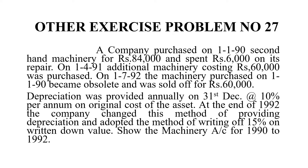If you look at the first method, it is the Straight Line Method at 10% depreciation. At the end of 1992, they change to the Written Down Value method at 15% depreciation. On 1990, they purchased a second-hand machinery for 84,000 and spent 6,000 on repairs, making the total cost of machinery 90,000.